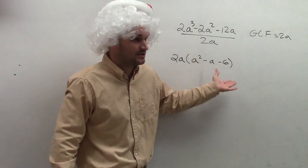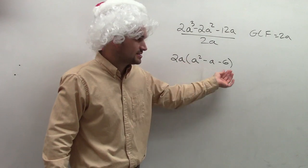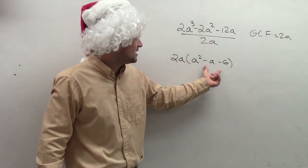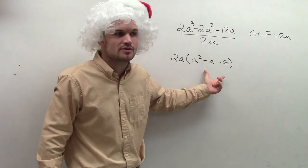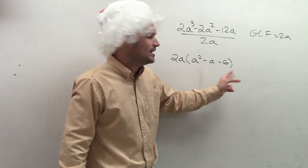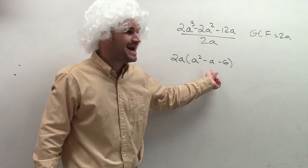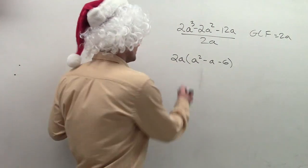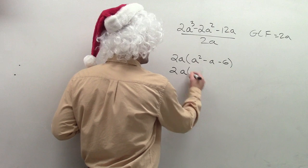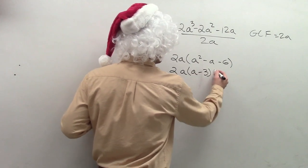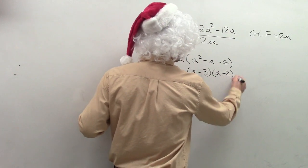So now I have completed factored. I am writing it now as a product, right? But then we want to look at this. Can we factor this trinomial even further? What two numbers multiply to give you negative 6 but add to give you negative 1? And then you can say, yeah, negative 3 and positive 2. So you can say a minus 3 times a plus 2.